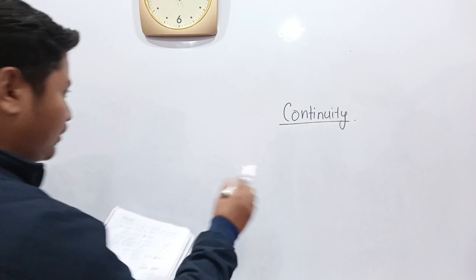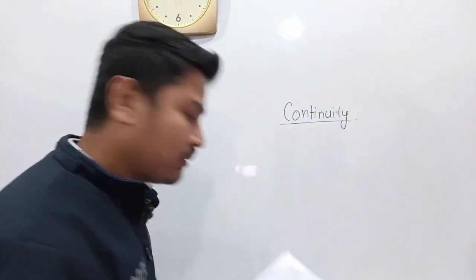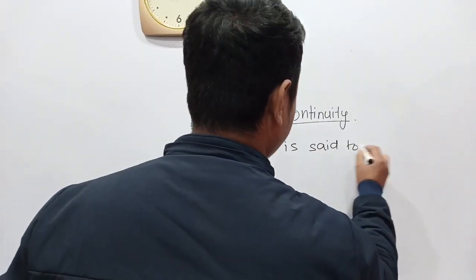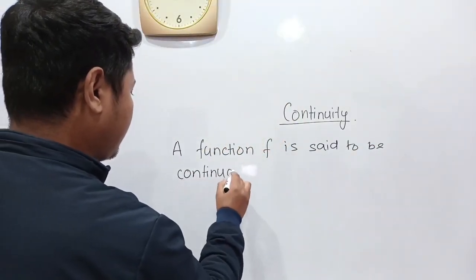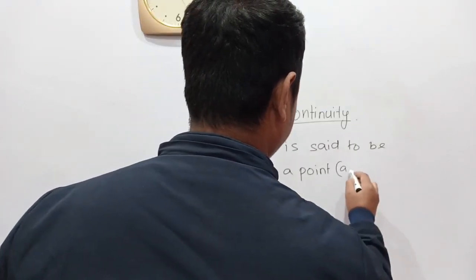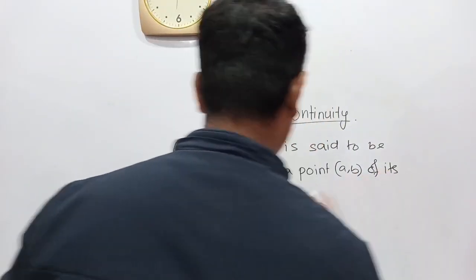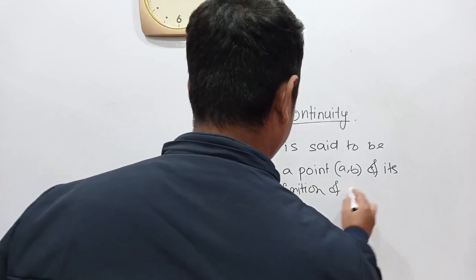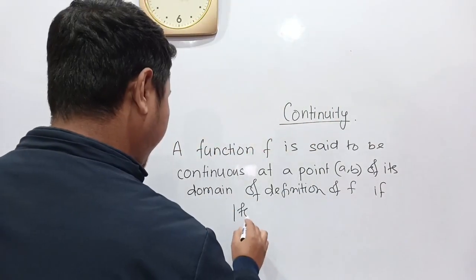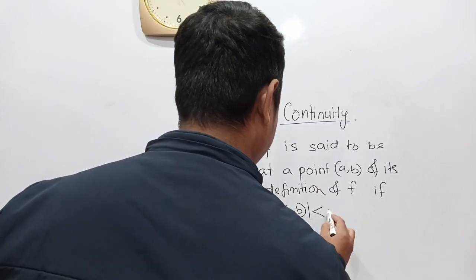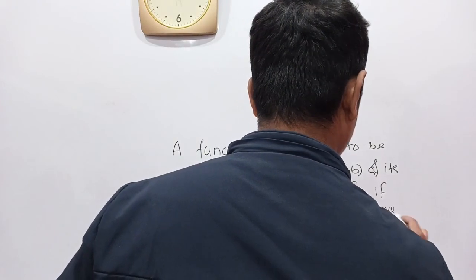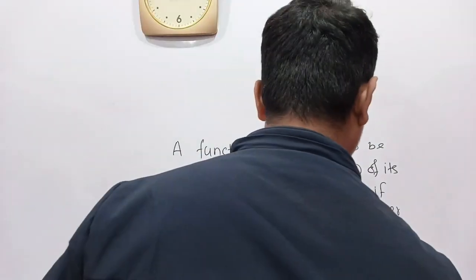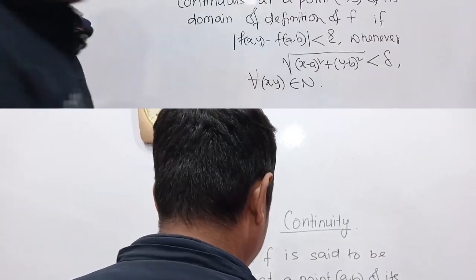Note this down or take a screenshot. A function f is said to be continuous at a point (a, b) of its domain of definition if: mod of f(x,y) minus f(a,b) is less than epsilon, whenever the square root of (x−a)² + (y−b)² is less than delta, and this holds for all (x,y) belonging to the neighborhood of definition.